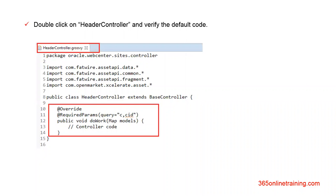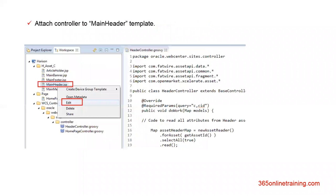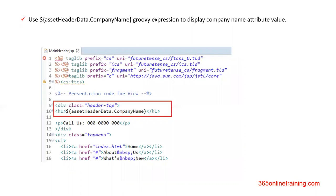Open the header controller and put the same code that we used in home controller main. Just change the name of the map because the variable name should not be the same. In the first task, our map name was assetPageMap; here, our name would be assetHeaderMap. Same with the model variable — for this task, our variable would be assetHeaderData. Again, we will attach this controller to our page let main header, which is responsible for loading the values of company name and the call us string attribute. We attach it using the same procedure as task one.